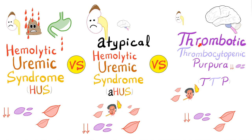Atypical hemolytic uremic syndrome and thrombotic thrombocytopenic purpura are very similar. Both of them have a pentad — five symptoms, not just three. You have microangiopathic hemolytic anemia, thrombocytopenia, acute renal failure, fever, and neurological symptoms. However, the difference is that renal failure is way more common in atypical HUS than in TTP. Neurological symptoms — usually altered mental status — are more common in TTP and almost non-existent in atypical HUS.